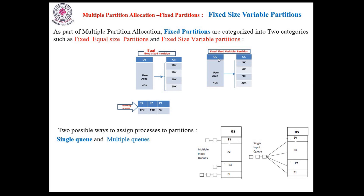Now look at the fixed sized variable partitions picture. The main memory is again divided into two parts — one for the operating system and one for the user area. The user area partitions are divided into fixed partitions, but the partition sizes are variable. This is called fixed sized variable partitions, or unequal sized partitions.